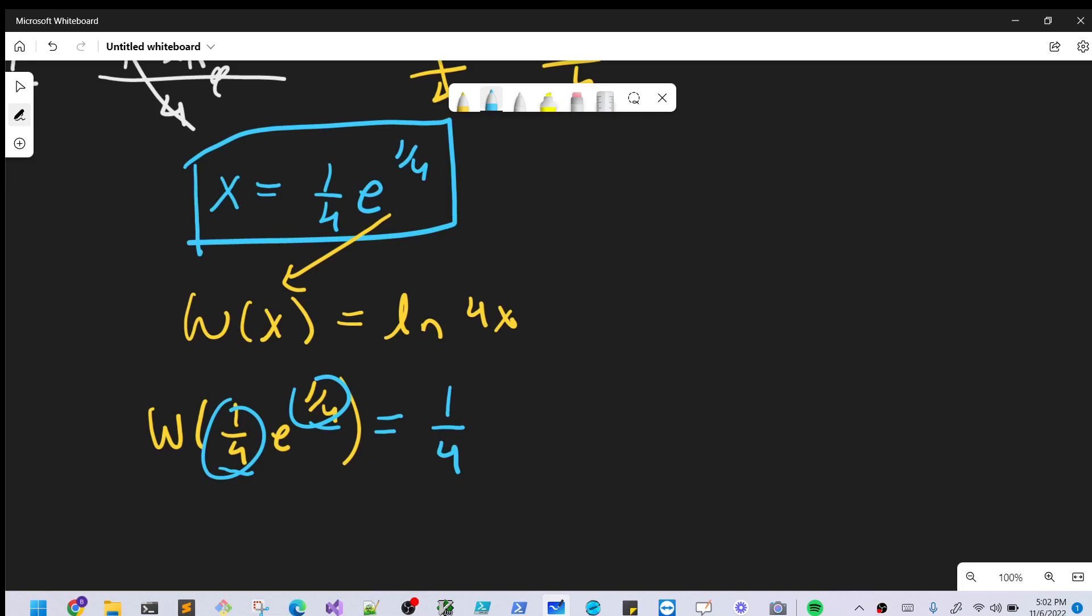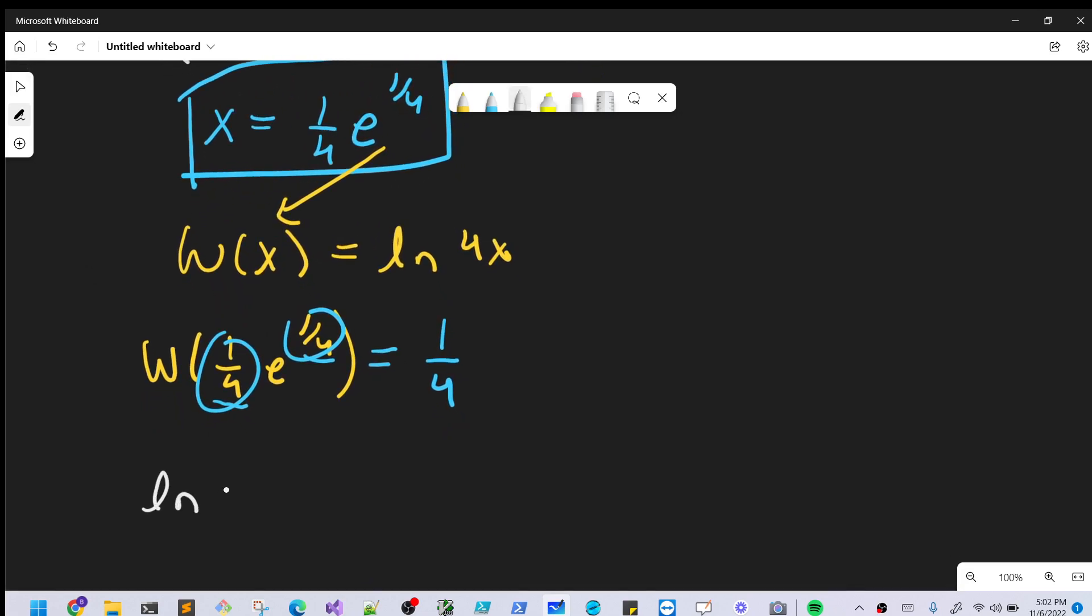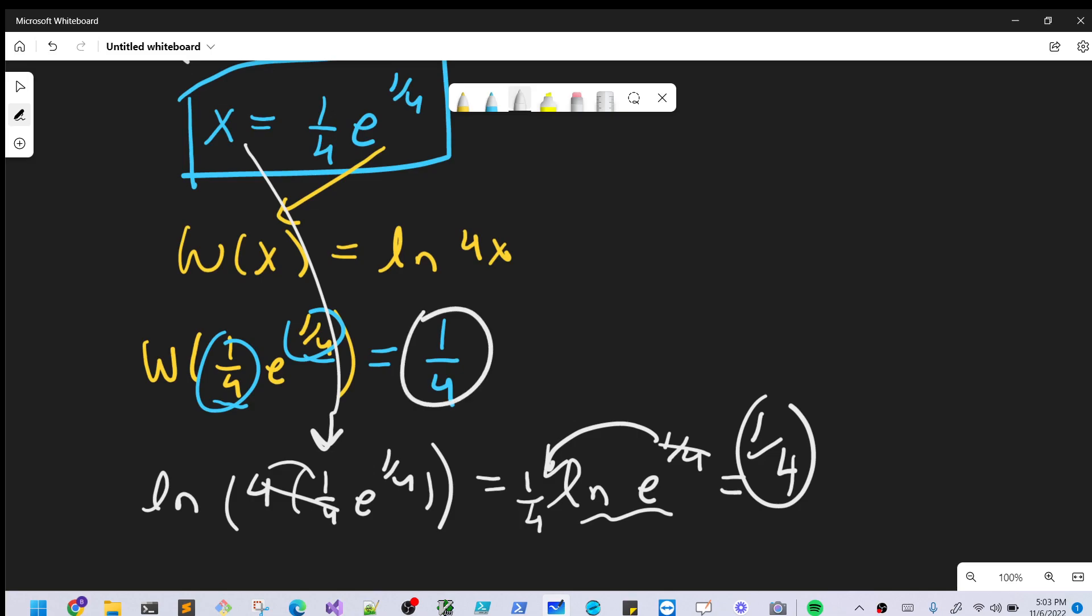And so hopefully, if we do the same thing with our LN 4X, so we'll have LN 4, and we'll plug in our X. So that's going to be times 1/4 E to the 1/4th. Okay, so we're going to multiply that. That's just a 1, so that cancels out. And we'll have LN E to the 1/4th. And we can bring our 1/4th here in front. And LN E is just 1. So, again, we have 1 over 4. So we get the same solution on right side and left side. That's a good indication that we got the right answer.